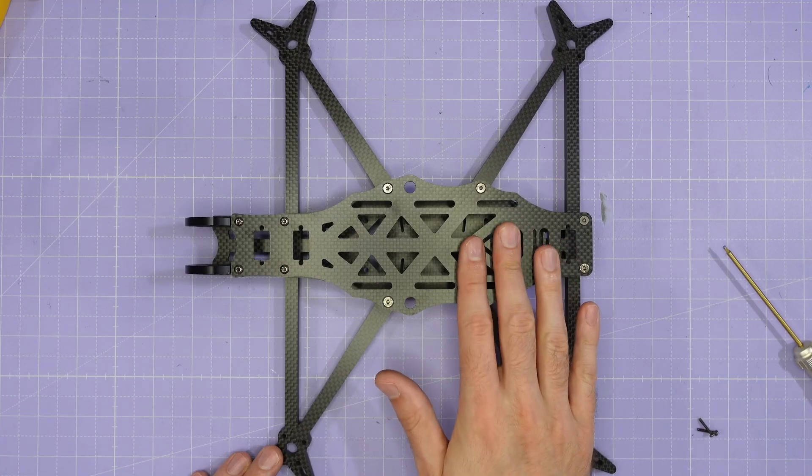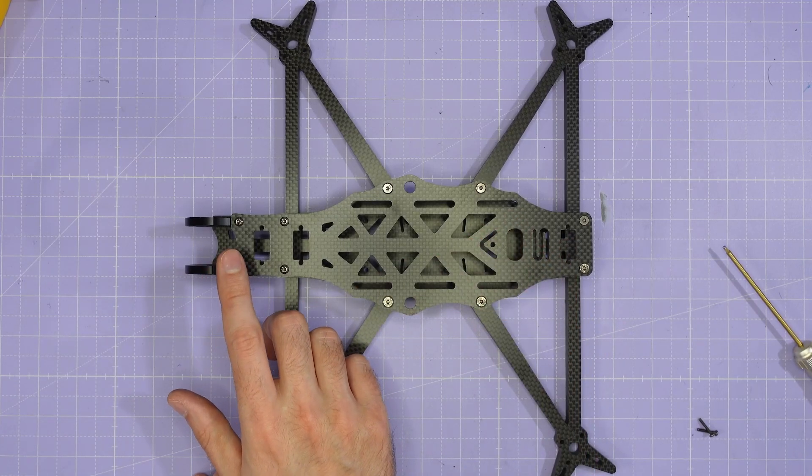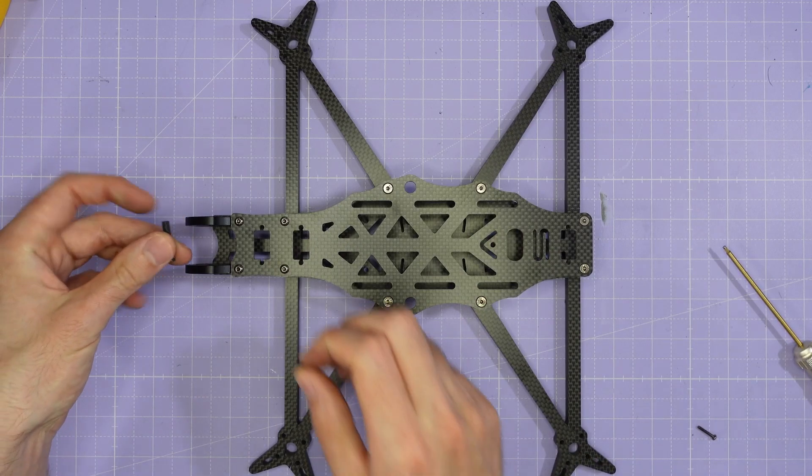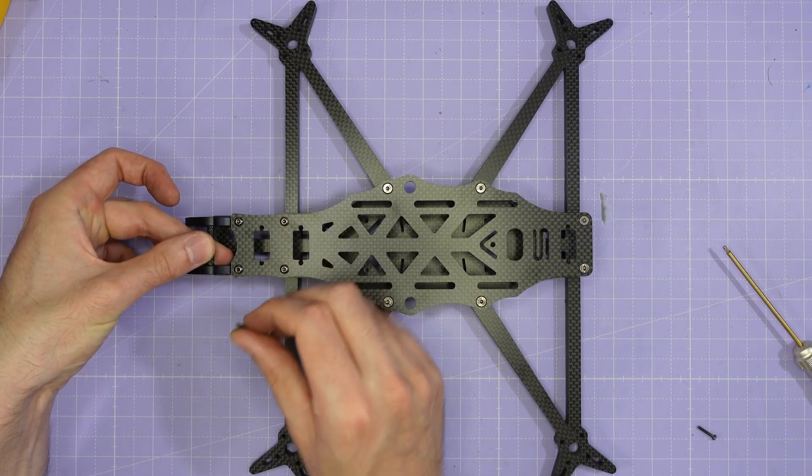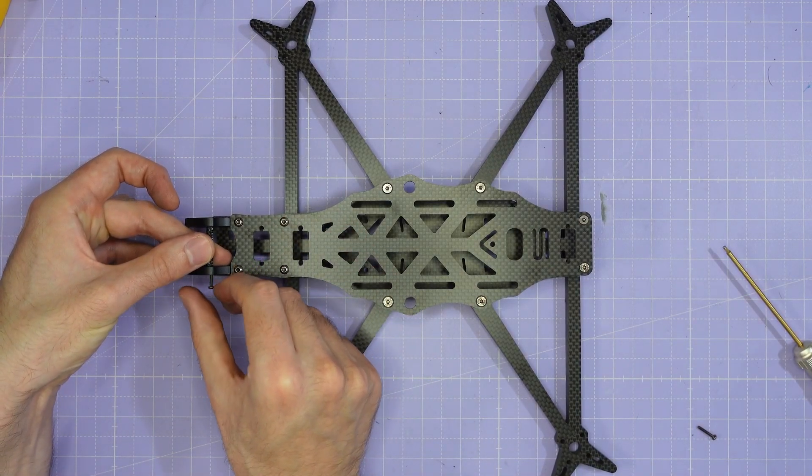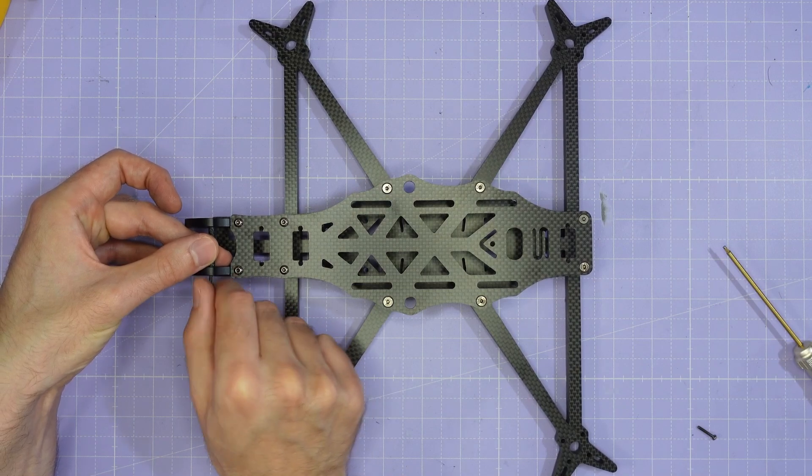Once you've got the top plate buttoned up the last thing you need to do is install the camera standoff and this is just an M2 by 23 millimeter standoff which you secure with two M2 by 10 button head screws. And with that your AOS 7v5 is complete.